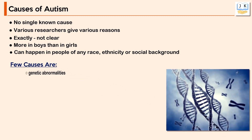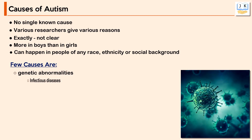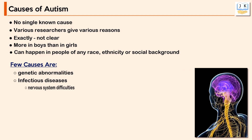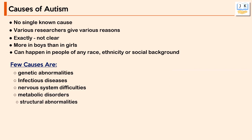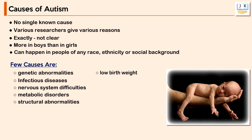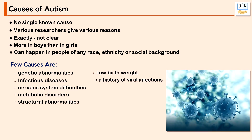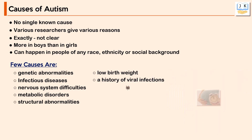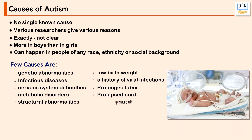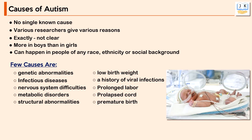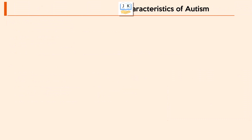Few known causes include genetic abnormalities, infectious diseases, nervous system difficulties, metabolic disorders, structural abnormalities, low birth weight, a history of viral infections, prolonged labor, prolapsed cord, and premature birth.